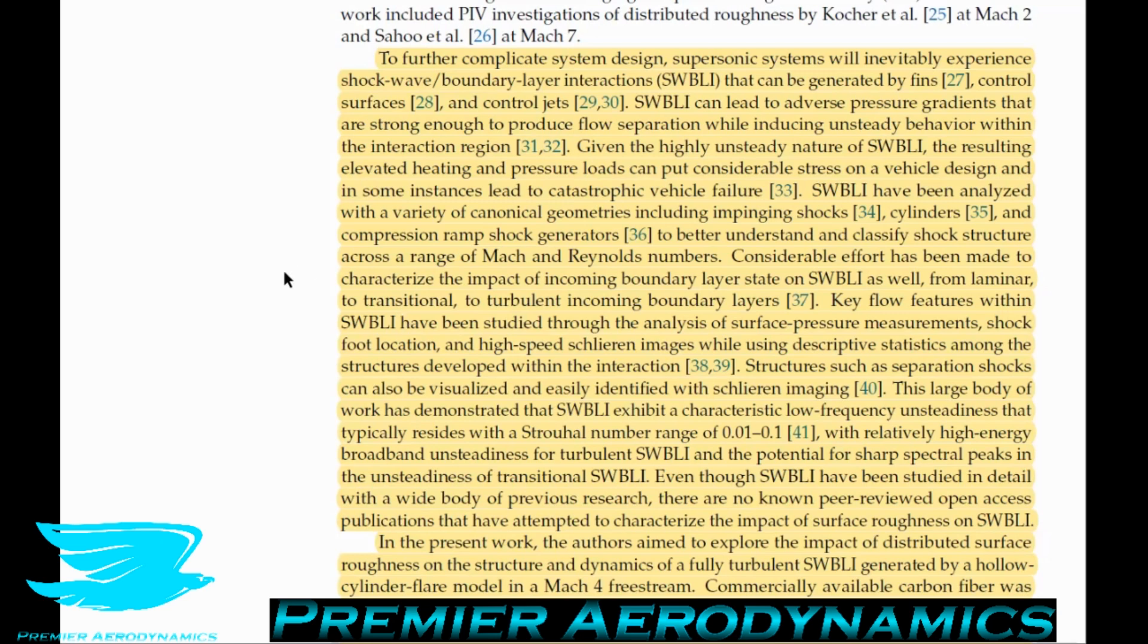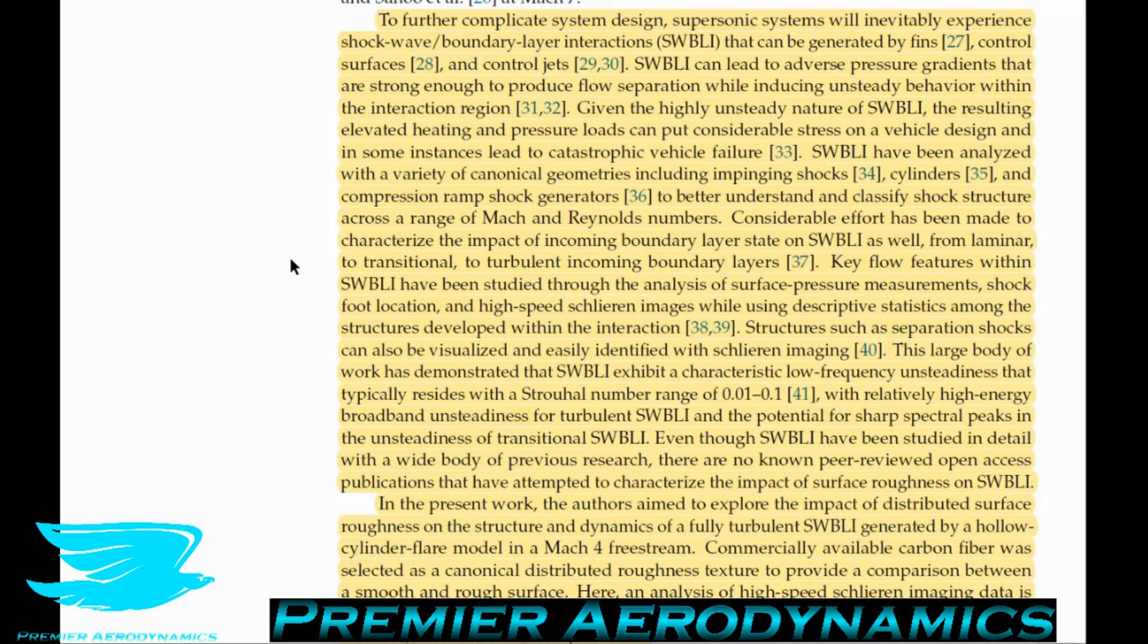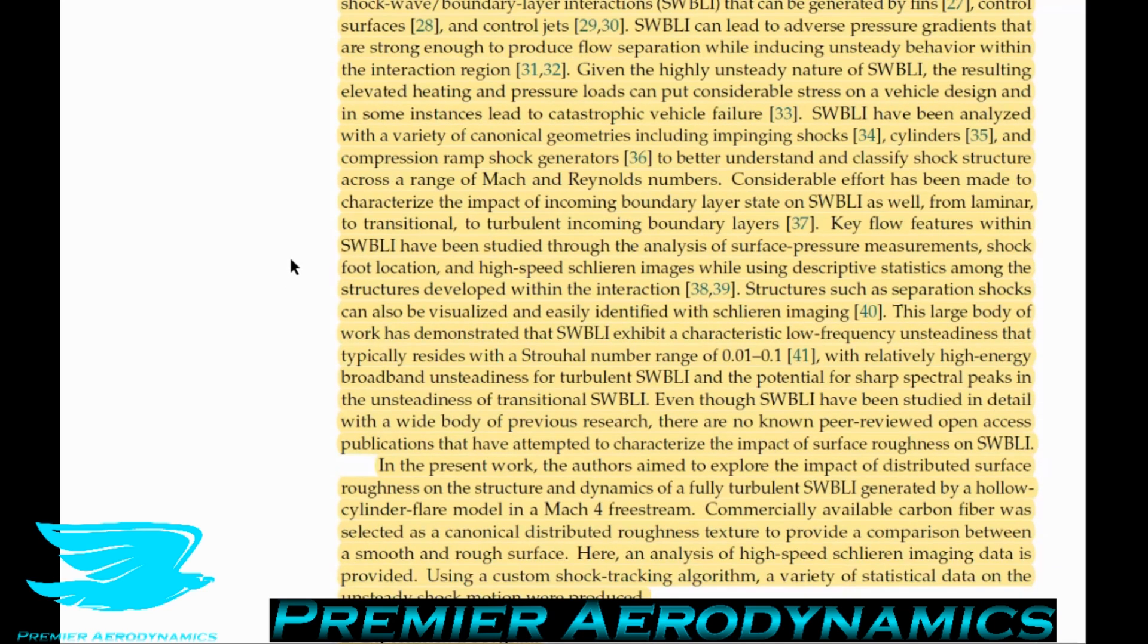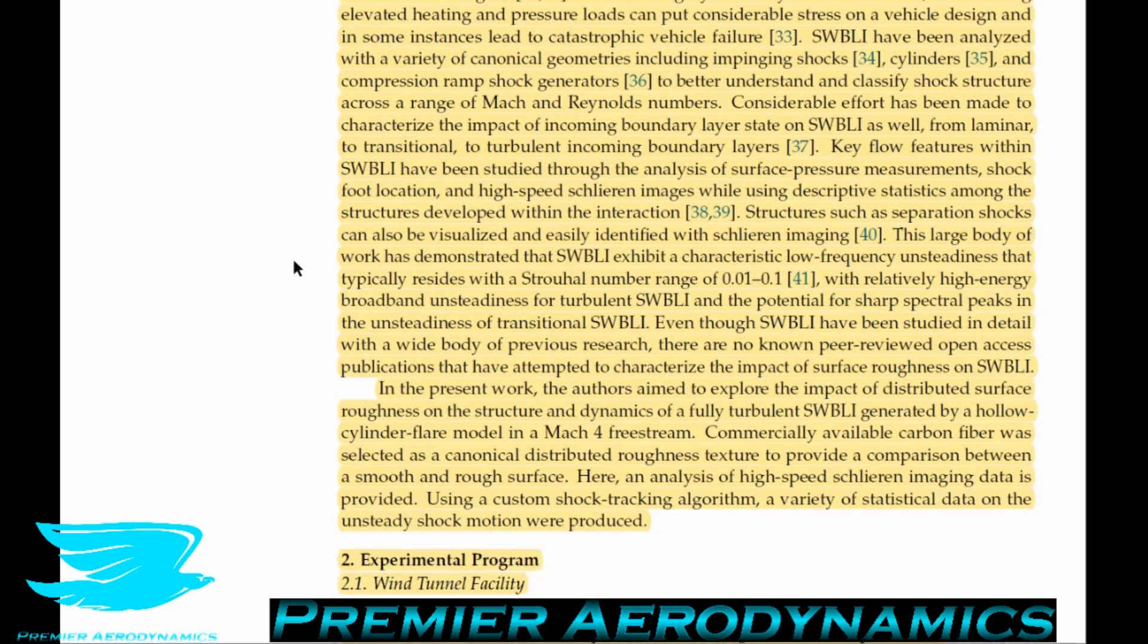Even though shockwave boundary-layer interactions have been studied in detail with a wide body of previous research, there are no known peer-reviewed open-access publications that have attempted to characterize the impact of surface roughness on this. So that's what this present work is looking at. To do so, they're going to be looking at a cylinder flare model with a Mach number of 4, the free-stream velocity. Commercially available carbon fiber was selected as a canonical distributive roughness texture to provide a comparison between a smooth and rough surface. An analysis of high-speed Schlieren imaging is provided using a custom shock tracking algorithm. A variety of statistical data on the unsteady shock motion were produced.